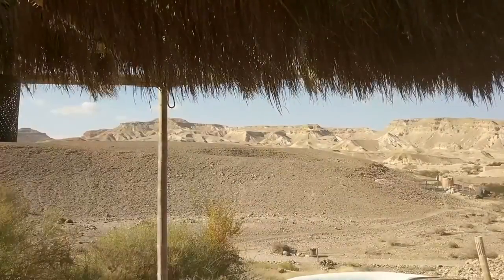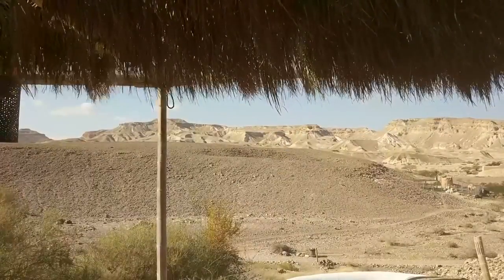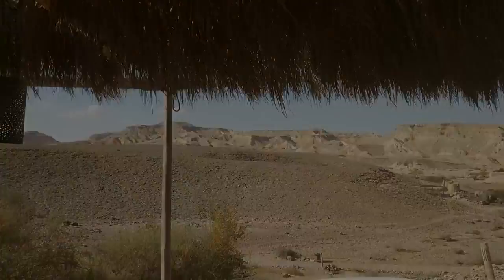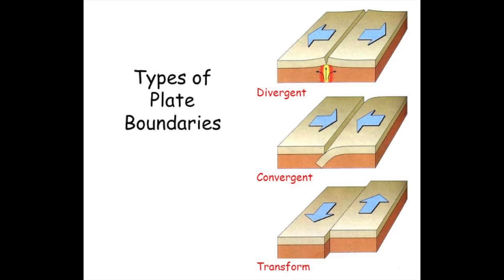But to talk about that, we have to look at plate boundaries. In between tectonic plates, we have three main types of boundaries: Transform, Convergent, and Divergent.